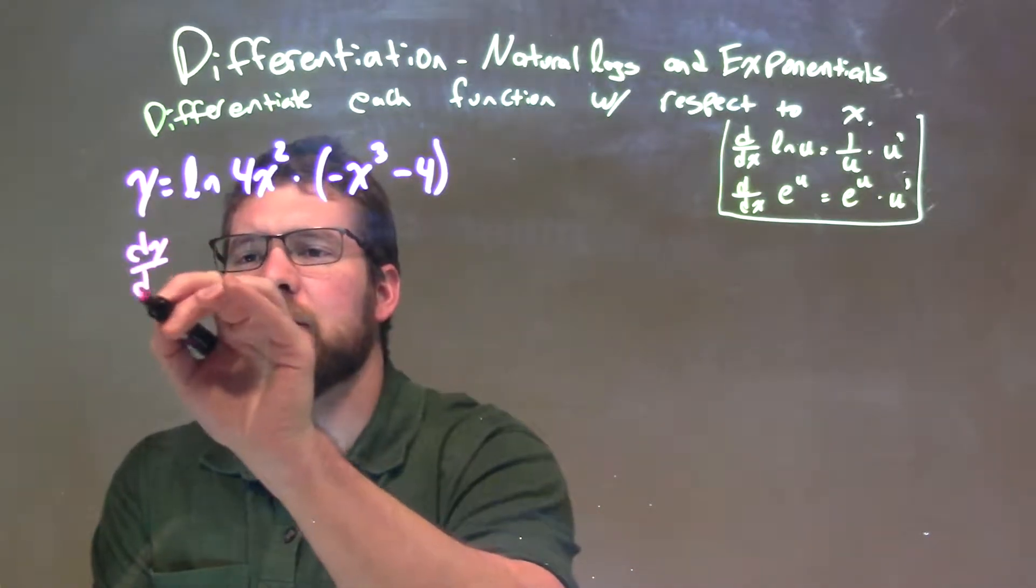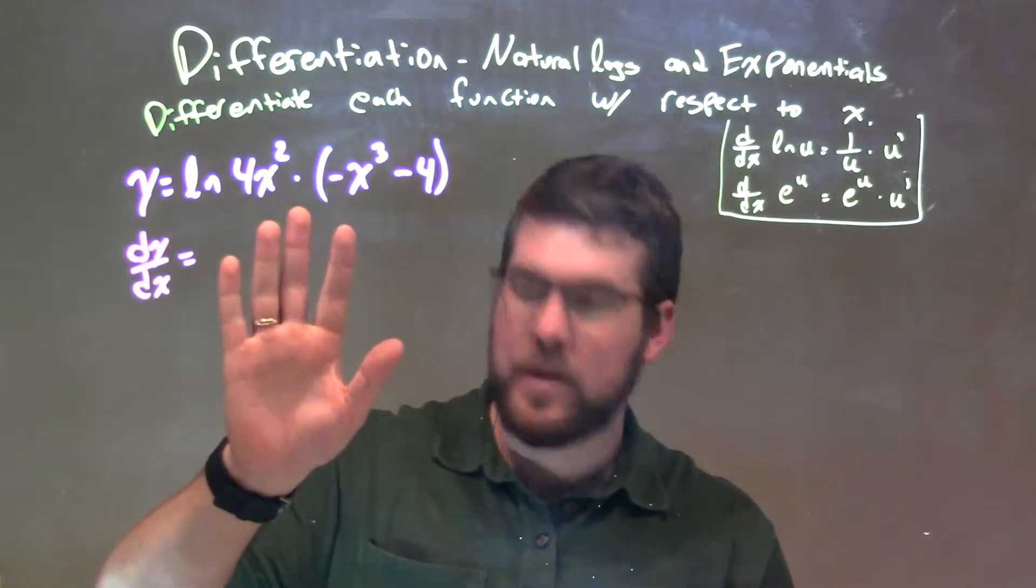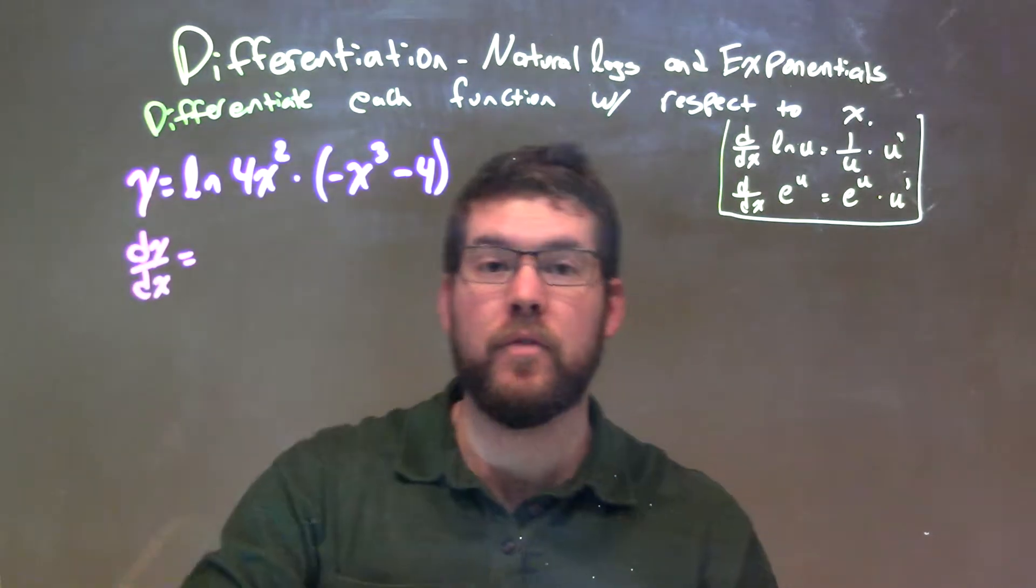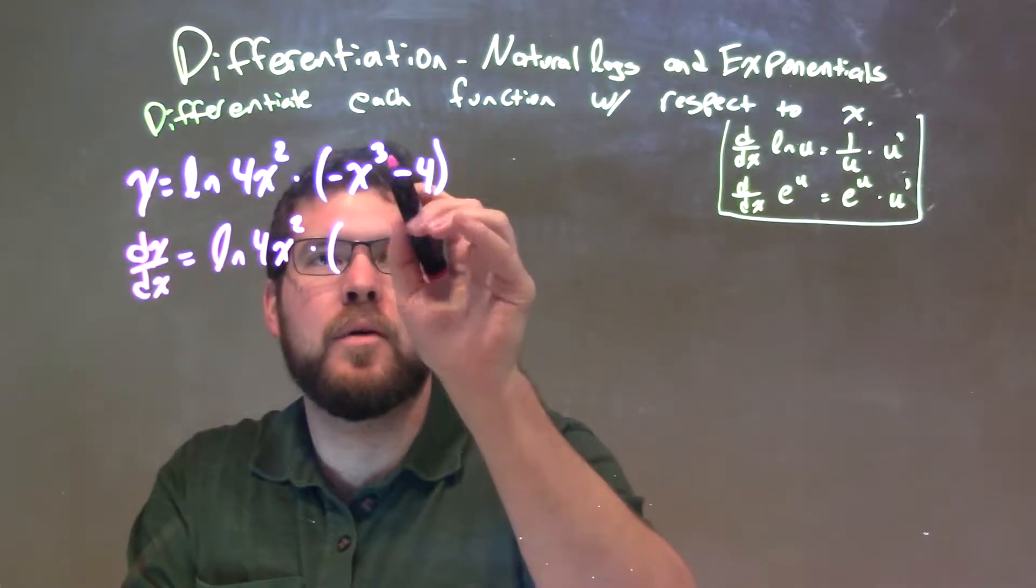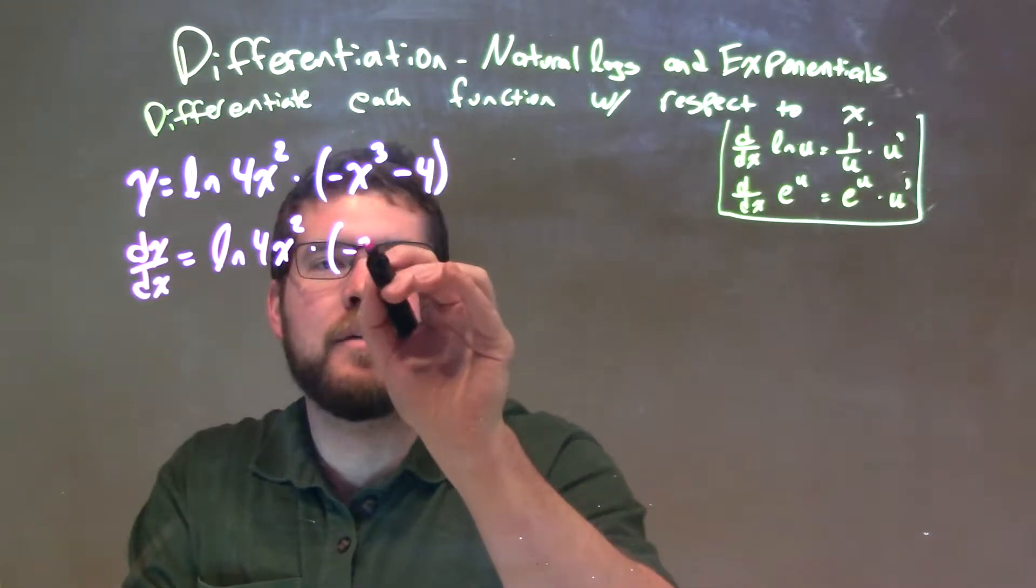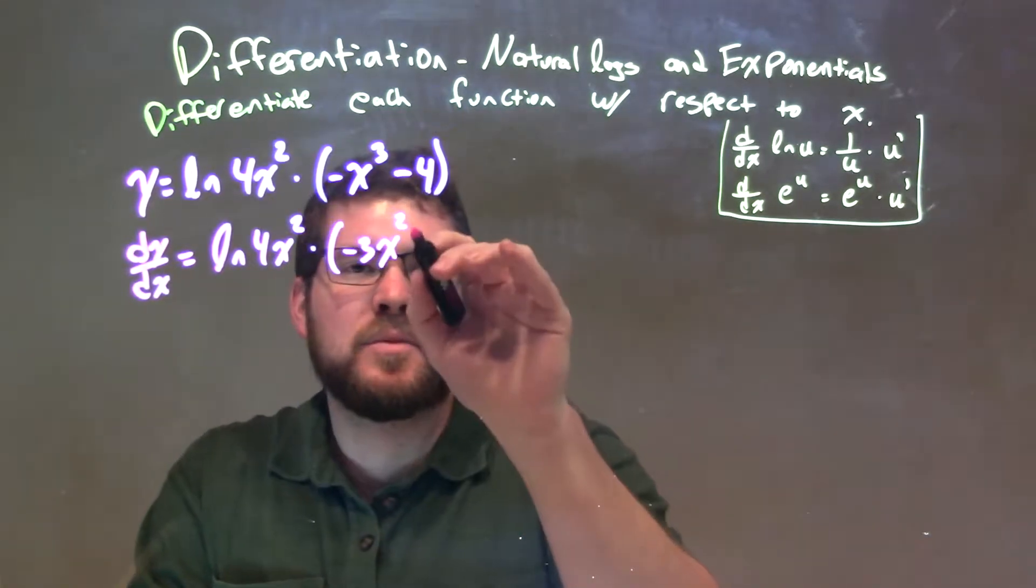So, we have dy/dx here. We're going to take the derivative, keep the product times the derivative of the second part. So, we have natural log of 4x squared times the derivative of the second part. Well, 3 comes down, negative 3x squared. And then, the derivative of negative 4 is 0, so we leave that.